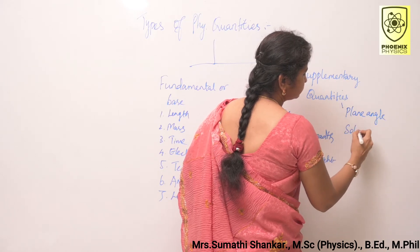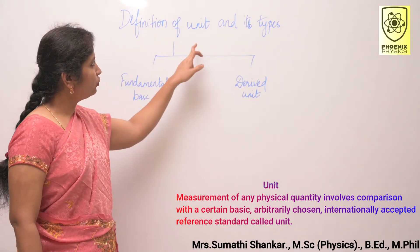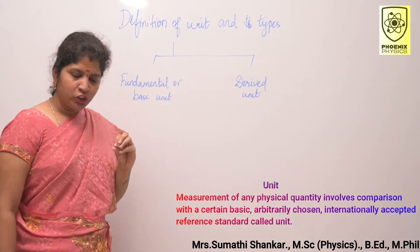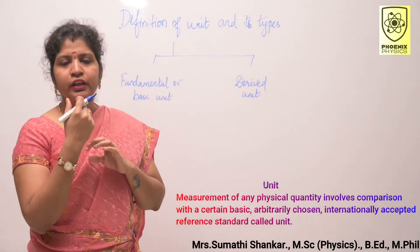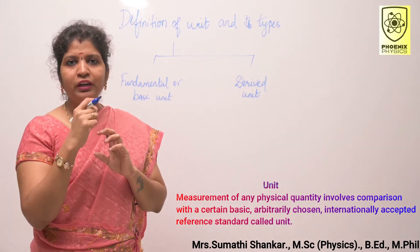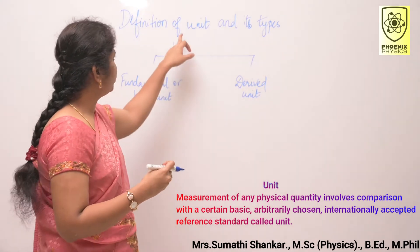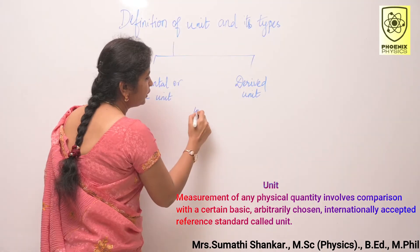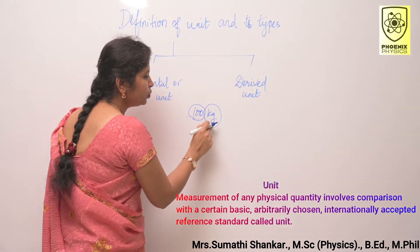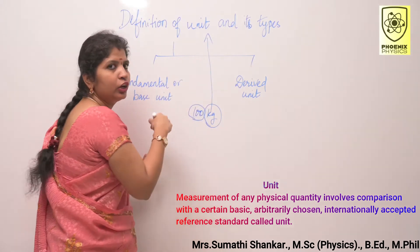Next topic: definition of unit and its types. What is a unit? Measurement of any physical quantity involves comparison with a certain basic, arbitrarily chosen, internationally accepted reference standard known as a unit. For example, 100 kilogram: here 100 is the magnitude and kilogram is the unit, which is accepted by everyone in the world.